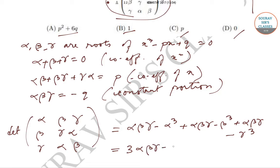This simplifies to 3·alpha·beta·gamma minus (alpha³ plus beta³ plus gamma³). We can use the algebraic identity that alpha³ plus beta³ plus gamma³ minus 3·alpha·beta·gamma equals one-half of (alpha plus beta plus gamma) times [(alpha minus beta)² plus (beta minus gamma)² plus (gamma minus alpha)²].